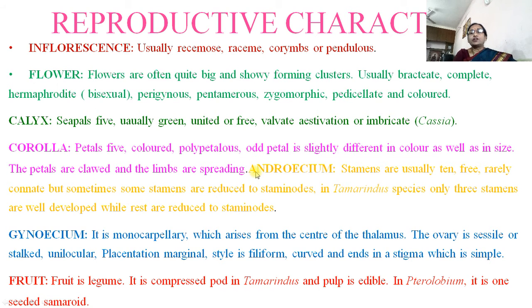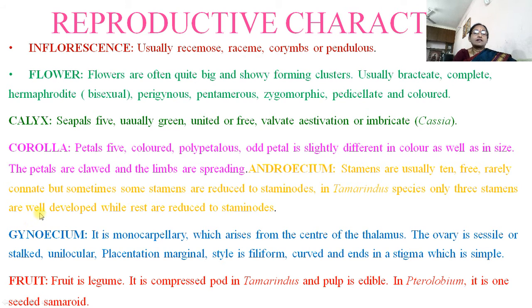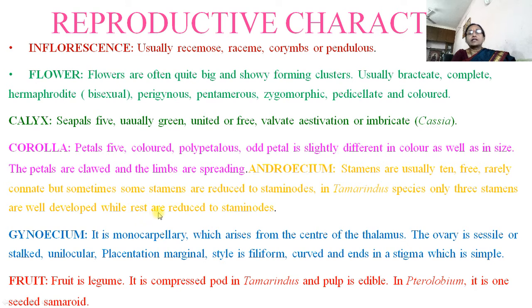Androecium: the stamens are usually ten and they are free, but sometimes staminodes are found. In Tamarindus indica, only three stamens are well developed while the remaining seven are reduced to staminodes.